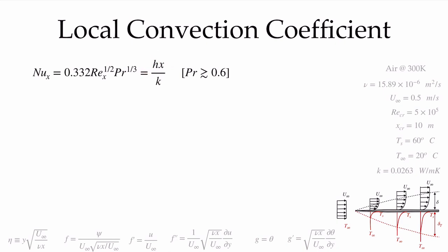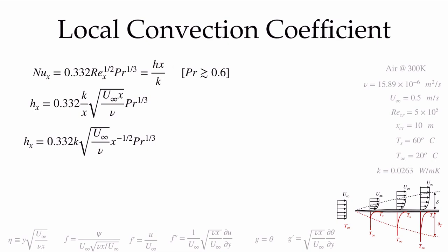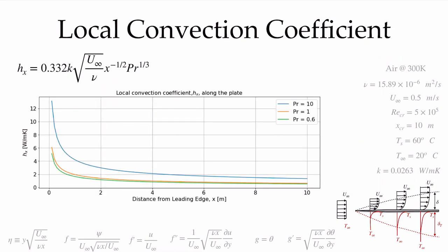From this Nusselt number expression, we solve for h(x), which varies as x^(-1/2). Using the thermal conductivity for air at 300 K and plotting for Prandtl numbers 0.1, 1, and 10, the convection coefficient is highest near the leading edge — where the temperature drops abruptly from T_infinity to T_s — and decreases as we move along the plate. Higher Prandtl numbers give higher convection coefficients due to a thinner thermal boundary layer.